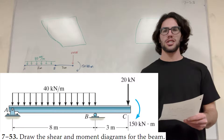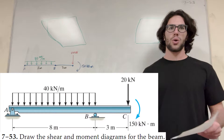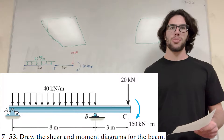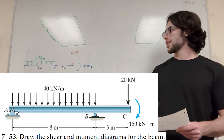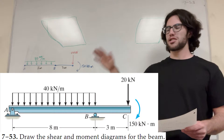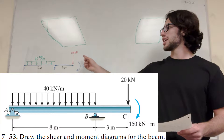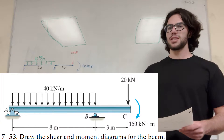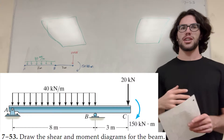What's up Cal gang? Alright, so we got the statics problem here. Our goal is to find the shear and moment diagrams for this beam. On the beam we have a distributed load, we have a force, we have a moment, and then we also have two points.